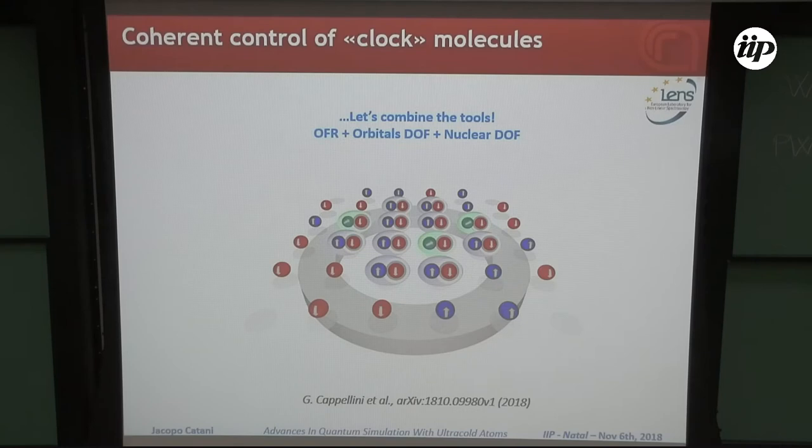Let me now combine the three ingredients I showed you: the orbital Feshbach resonance, the orbital and nuclear degrees of freedom, in order to show you how it is possible to use them to create a degenerate sample of molecules, orbital molecules, which you can also coherently address in terms of different spin configurations.